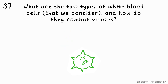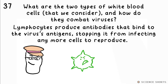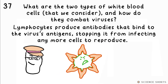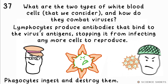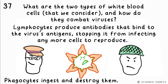Question 37. What are the two types of white blood cells and how do they combat viruses? Lymphocytes produce antibodies of varying shapes. Once the right one is found, many copies are produced. These antibodies bind to the antigen on a virus's protein coat, stopping it from injecting its genetic material into cells so more copies won't be synthesized. The antibodies also cause the virus to clump together, making it easier for phagocytes to ingest and destroy them.